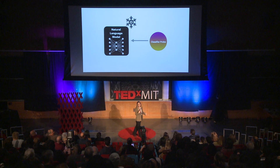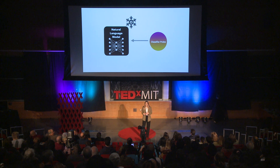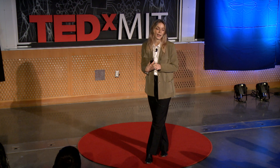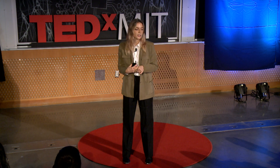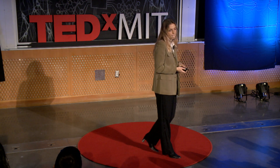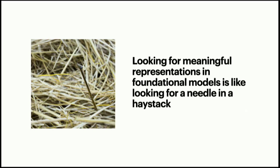This is obviously a fairly simplified explanation — if you're curious, there are YouTube videos to explore further. But one of the main challenges with probing is that we don't know if what we're finding is actually a causal representation. Does the model actually use the information discovered by a probe? In really big, complex models, this is super hard — looking for meaningful representation in foundational models is a little bit like looking for a needle in a haystack.